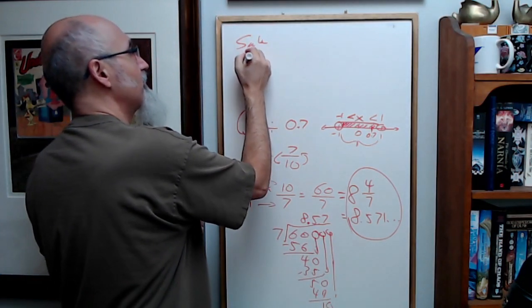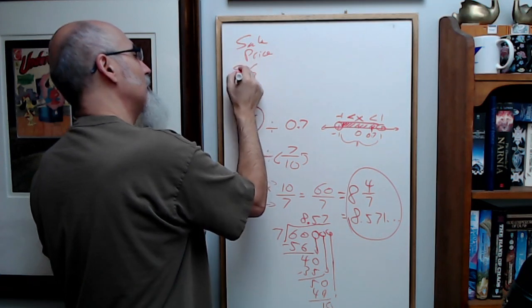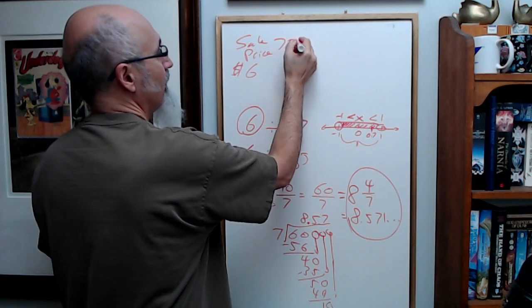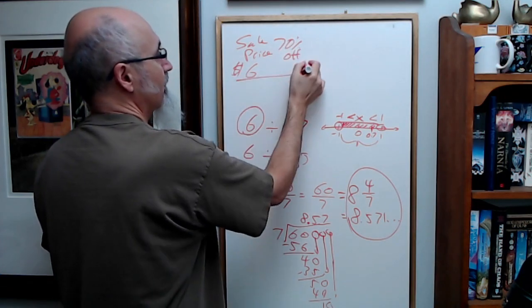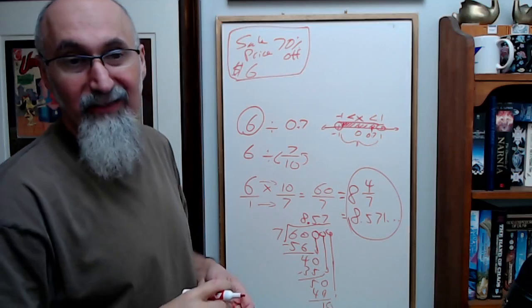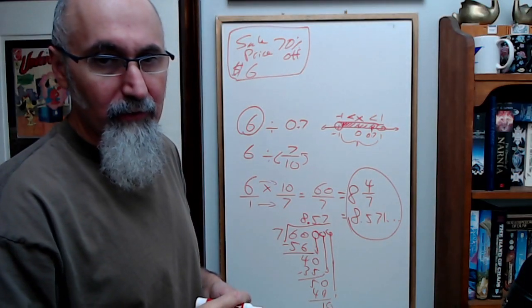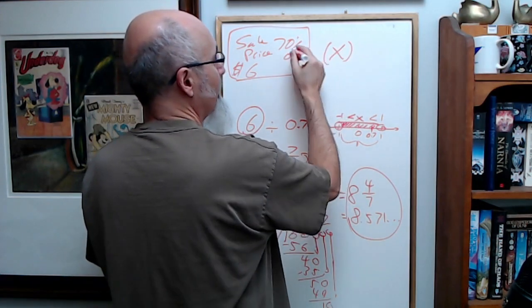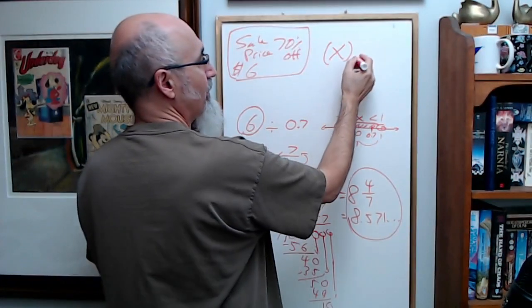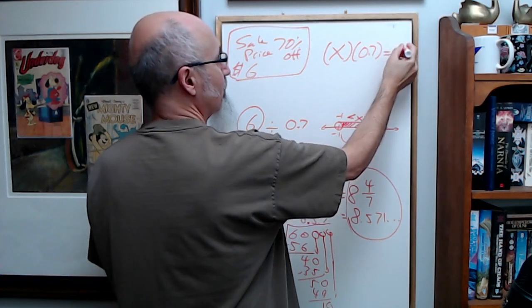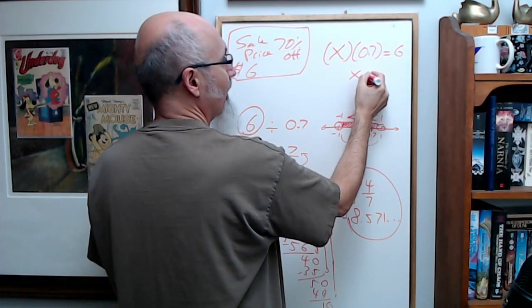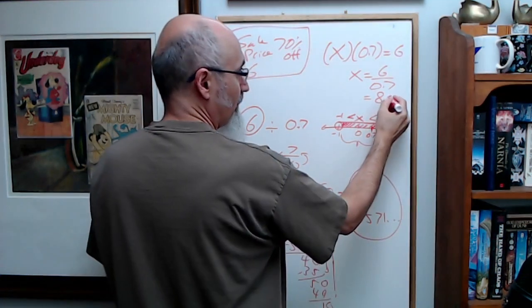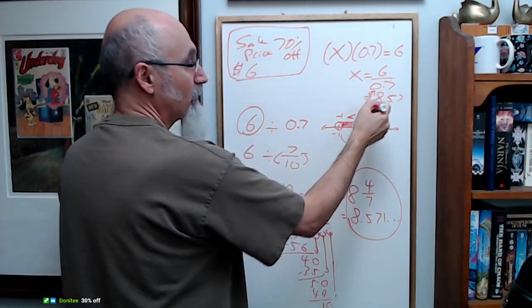$6. Sale price, 70% off, and it's $6. What if you wanted to find the original price? You would tell yourself, hey, the original price times the percent off, 0.7 has to equal 6. So you go X is equal to 6 divided by 0.7, and that's going to be 8.57. So that's the original price.